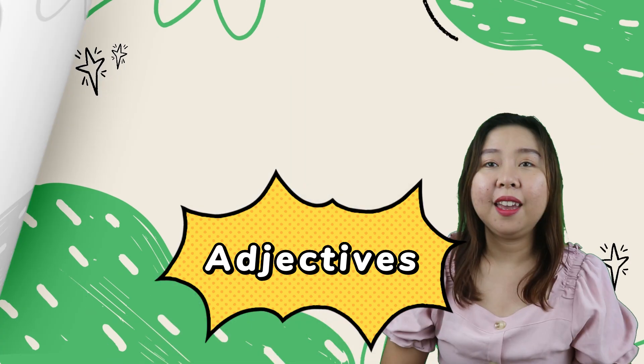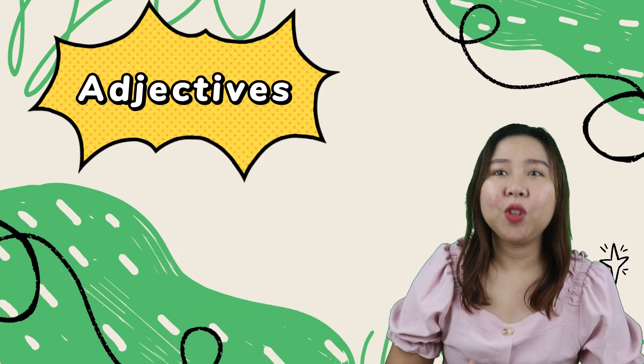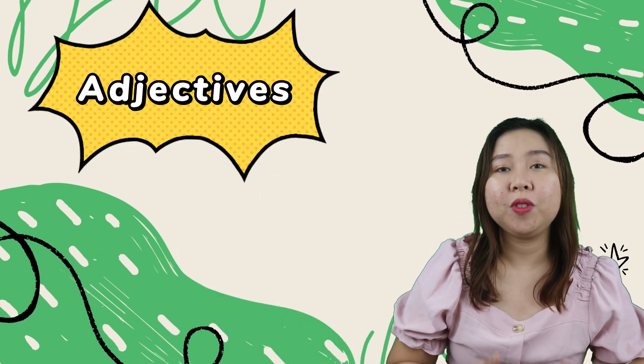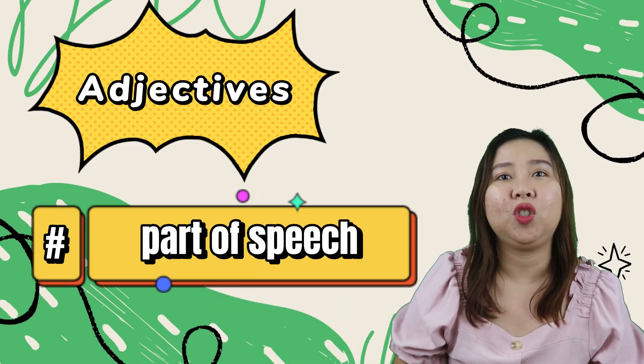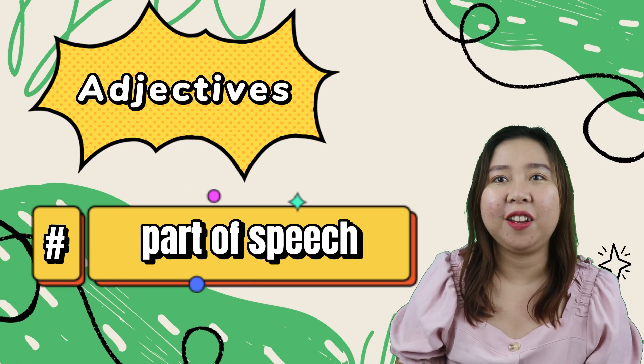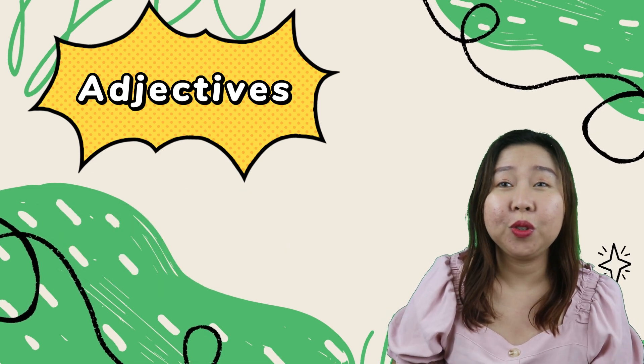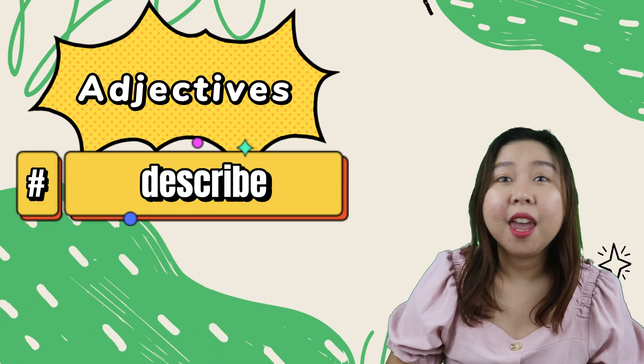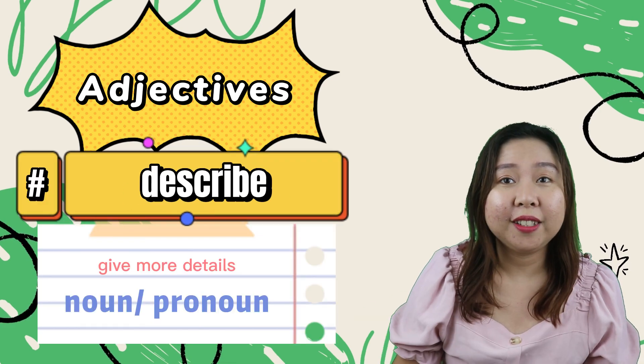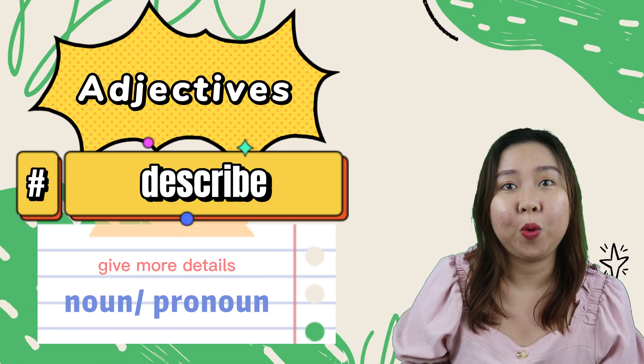Hi, this is Jelly, and today we are going to be talking about adjectives. Adjectives are one of the most important parts of speech in the English language. They are used to describe and give more detail to nouns and pronouns. Adjectives allow us to paint pictures with our words.